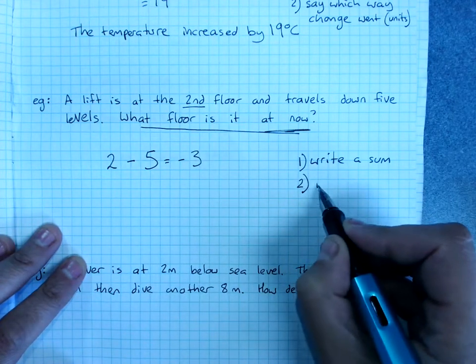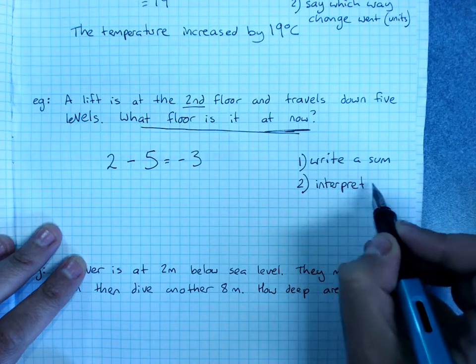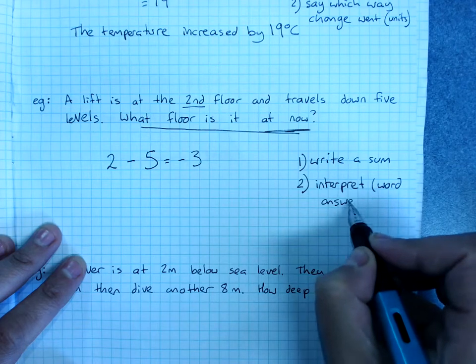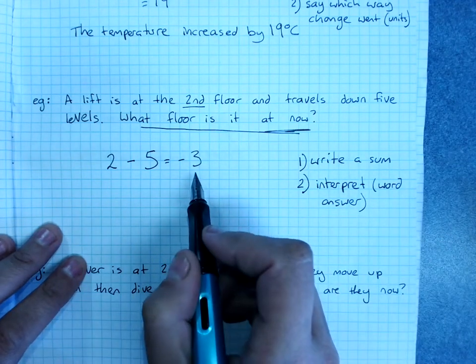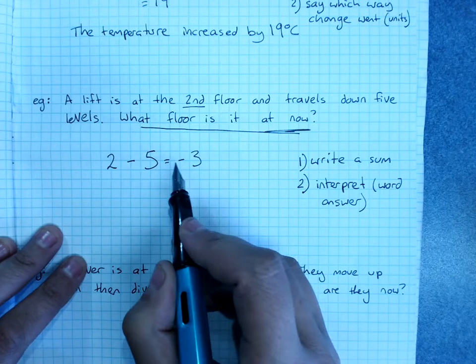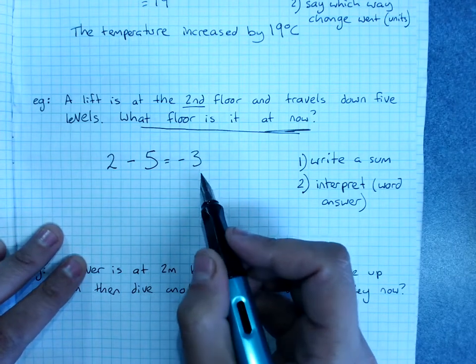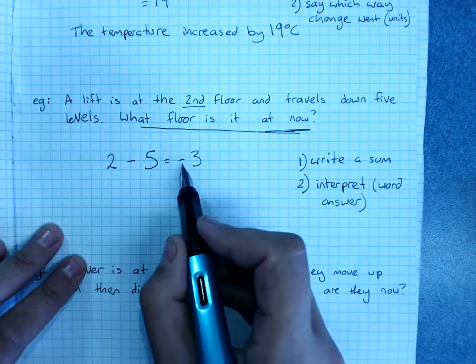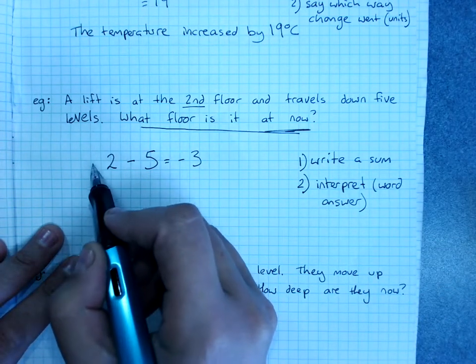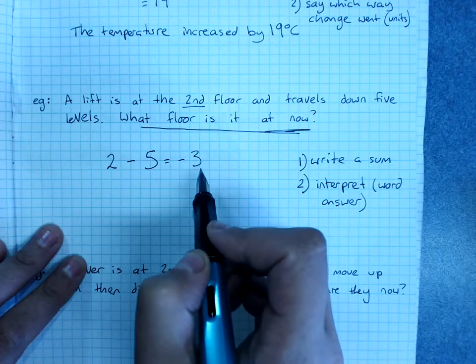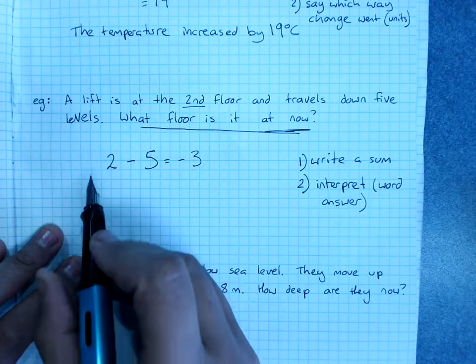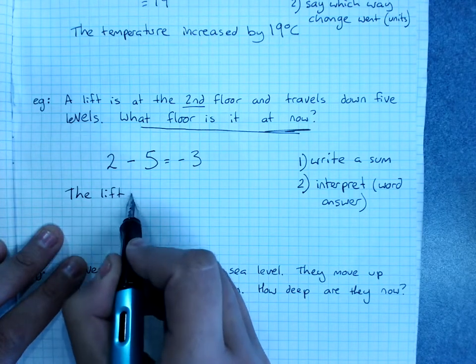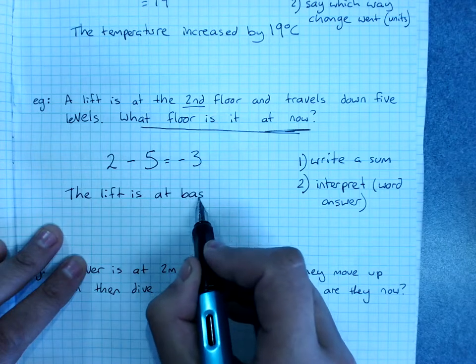So then you have to interpret with a word answer. What does floor negative three mean? It's at floor negative three. That's basement level three. Remember the basement levels are floors below ground, whereas the second floor is above ground. So we can use the negative to mean floors below ground. So you say the lift is at basement floor three.